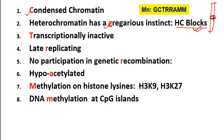In metaphase chromosomes you can see a banding pattern of heterochromatin and euchromatin. These blocks are seen more on metaphase chromosomes. During interphase you will see fewer blocks of heterochromatin. But they are gregarious in nature, meaning clumped chromatin from different regions will clump together and form a block.